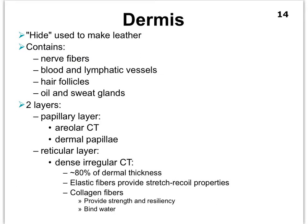As a side note, the dermis is what we often refer to as the hide when leather is made. The collagen fibers found in the dermis provide strength and a tight appearance to our skin. As we get older we lose a lot of collagen and our skin gets wrinkly. Collagen fibers also bind water, so it becomes more and more difficult with age to hold on to water in our skin, contributing further to a wrinkly look.